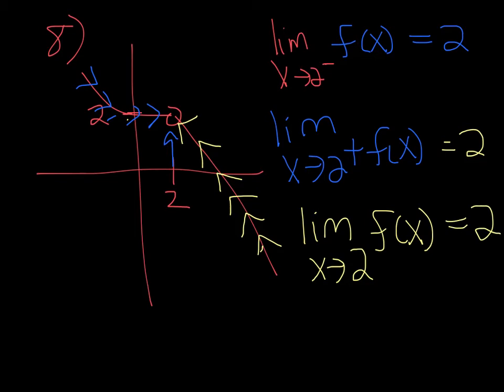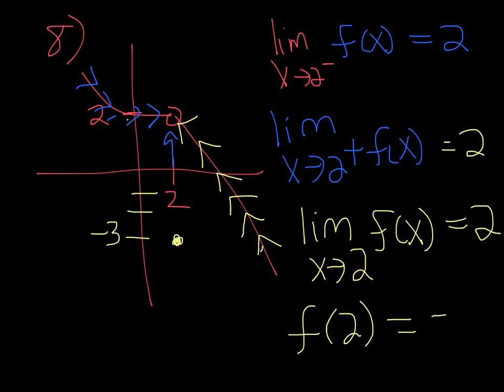If these were not the same, then the limit wouldn't exist. Then it says find f of 2. The actual value of f of 2 would be negative 3, because they have a solid dot right here at negative 3. So the limit and the function value both exist, but they're not the same — that just means that the function is discontinuous.